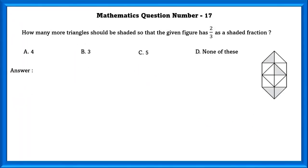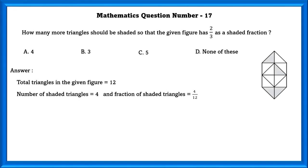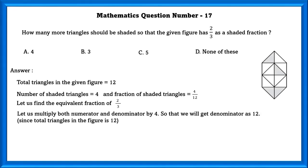Mathematics question number 17. How many more triangles should be shaded so that the given figure has 2 by 3 as shaded fraction? Here, the number of triangles in the given figure is equal to 12 and number of shaded triangles is equal to 4 and the fraction of the shaded triangles is equal to 4 by 12. Let us find the equivalent fraction of 2 by 3. Let us multiply both numerator and denominator by 4 so that we will get the denominator as 12. If we do that, we will get 8 by 12 as the equivalent fraction. In order to get 2 by 3 as shaded fraction, we have to shade 4 more triangles.